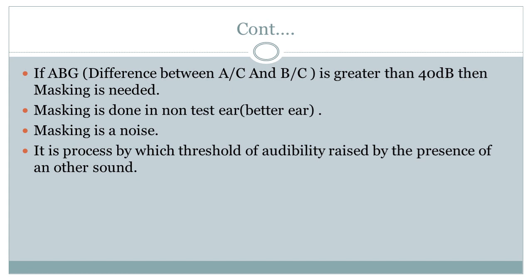If the difference between air conduction and bone conduction — the air-bone gap — is greater than 40 dB, then masking is needed. Masking is done in the non-test ear, which is the better ear.